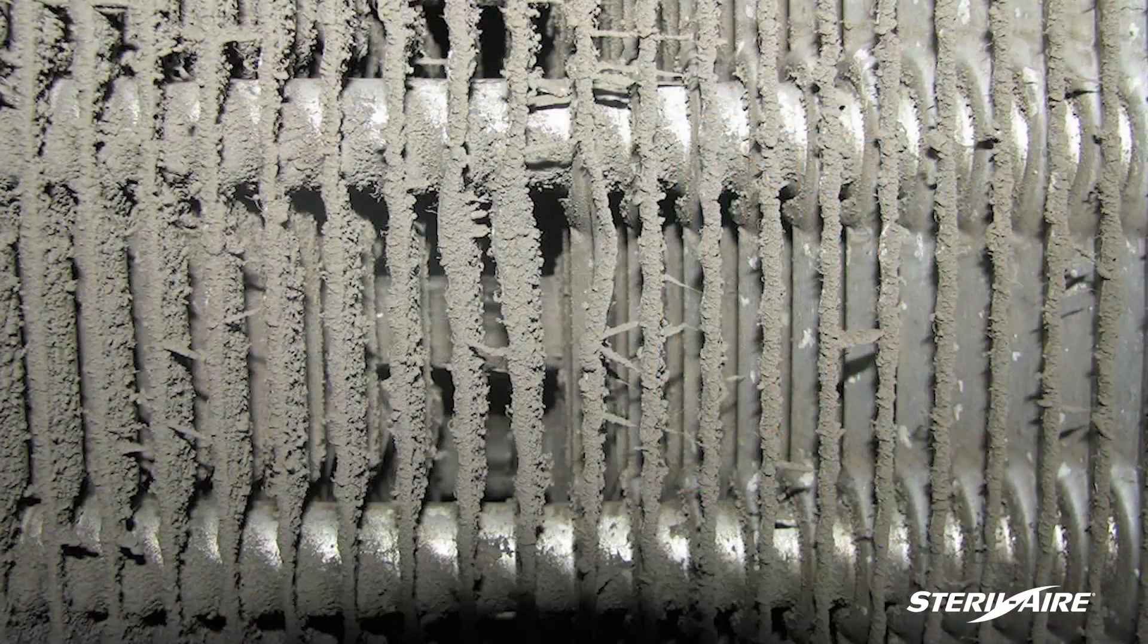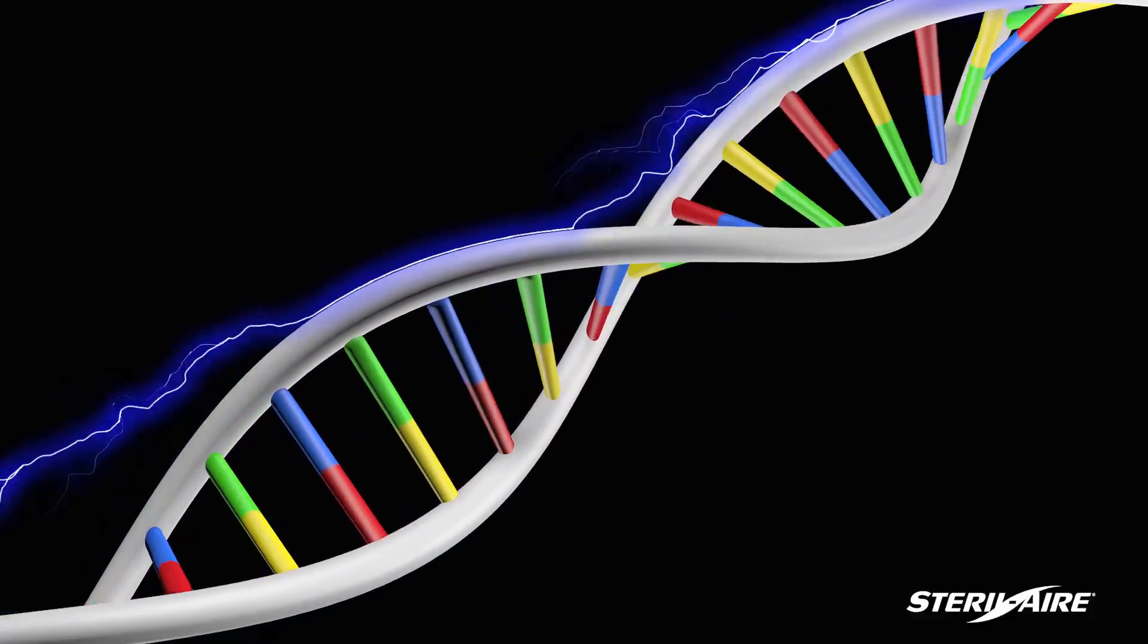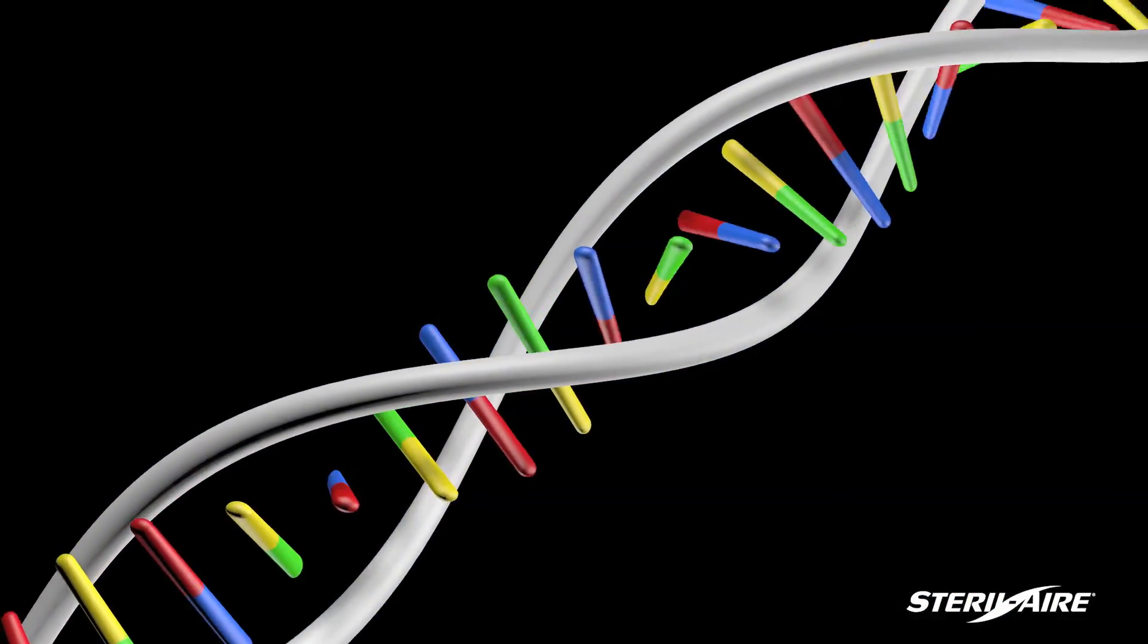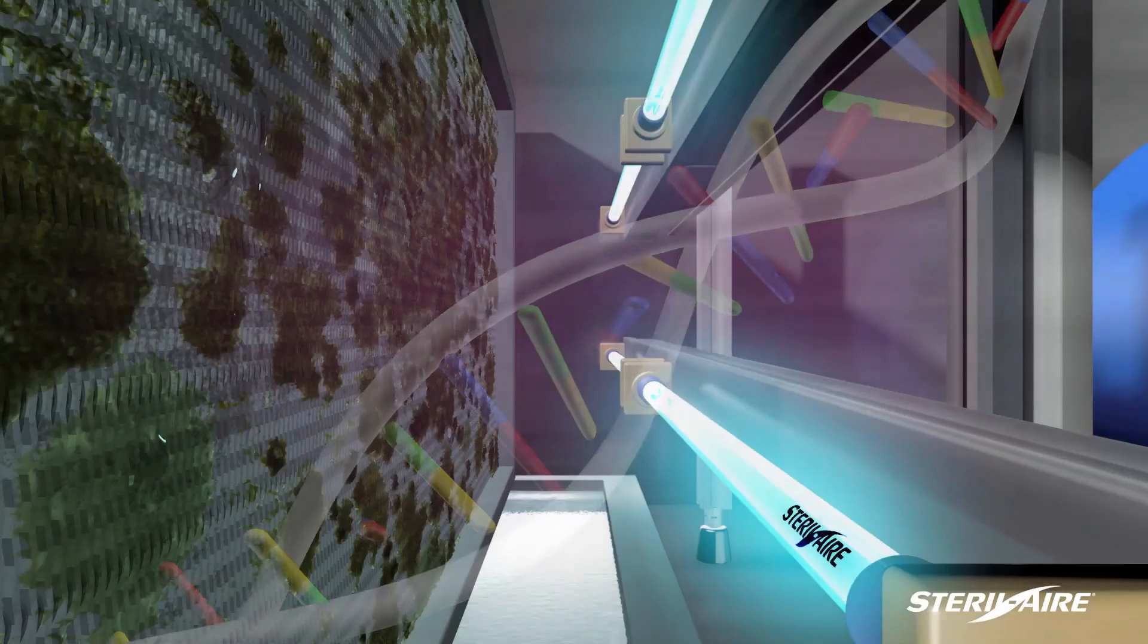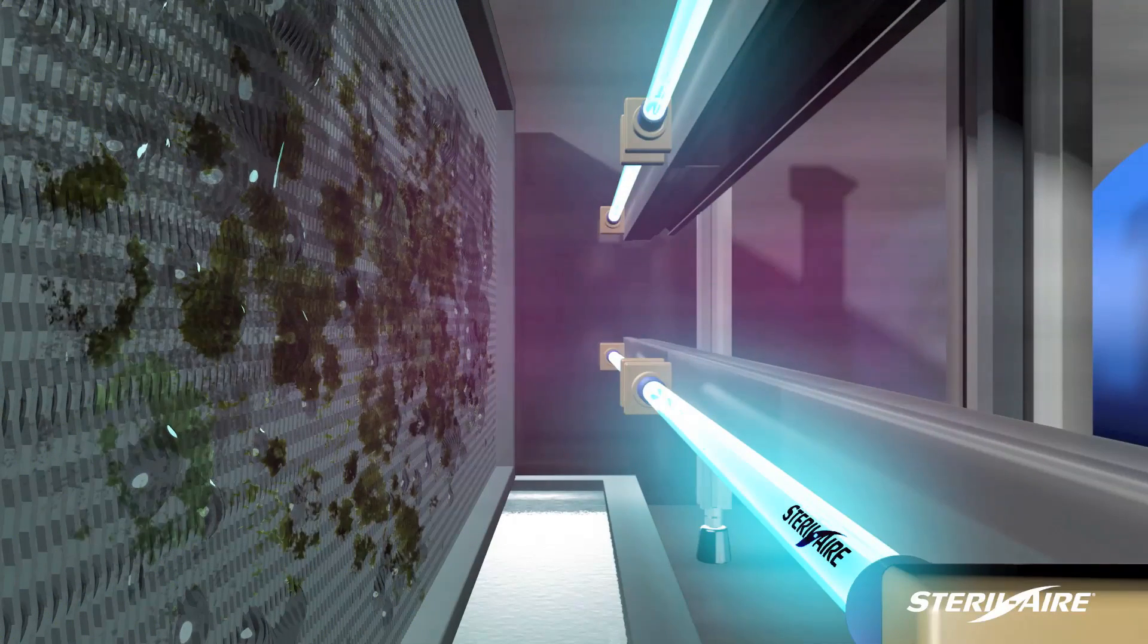Sterile air's emitters continuously clean the coil fins by destroying the DNA inside the microbes. Once the DNA is destroyed, the microbe can neither grow nor duplicate, so it dies.